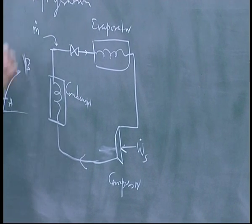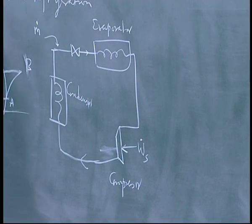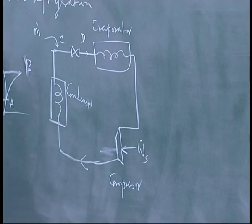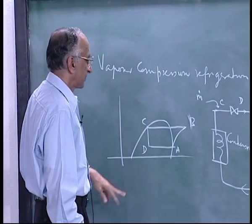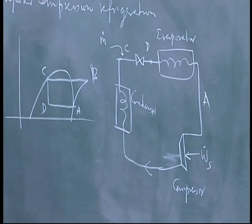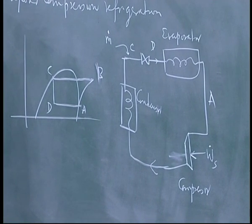There is a fluid flowing at some rate m dot. Looking at steady state operation, the throttling operation starts at C, so this is CD, then DA is the evaporation, AB is the compression and BC is the condensation.